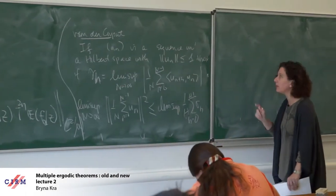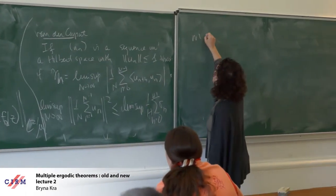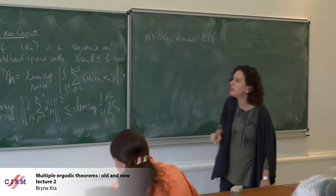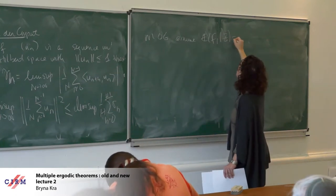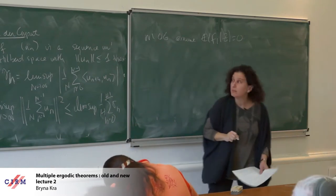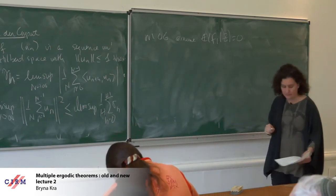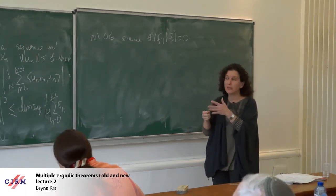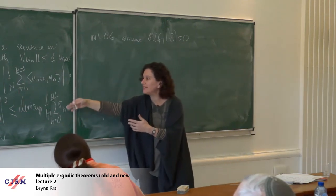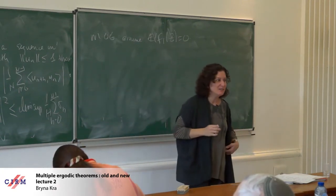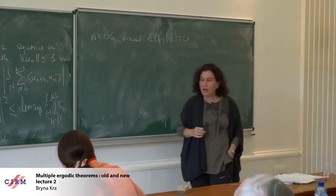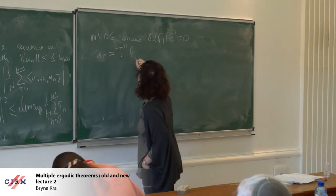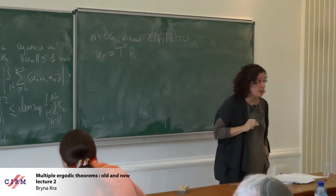Without loss of generality, I can assume the expectation of f1 on the Kronecker factor is zero. Then I'm going to apply this criterion for showing convergence. The advantage of working with zero is that I just show this side is zero, therefore that side is zero — it makes life a little bit easier. The way to do this is to use the unitary operator, setting u_n equal to T^n f1 times T^{2n} f2.